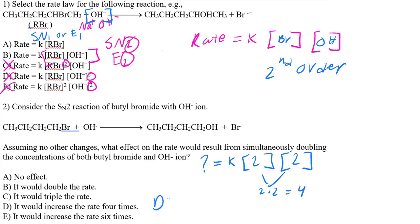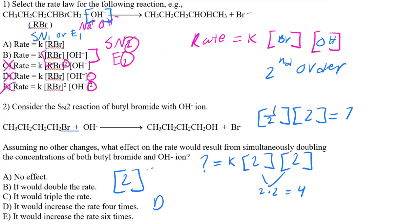Here's something to think about: if we decreased bromide by a half and increased hydroxide by 2, then 2 times one-half is just 1 — the rate would stay the same. This shows that in an SN2 or E2 reaction, the rate depends on both substrates. If you increased one by 2 and the other by 4, then 4 times 2 is 8, and the rate increases by 8. You just multiply them — you don't square them.